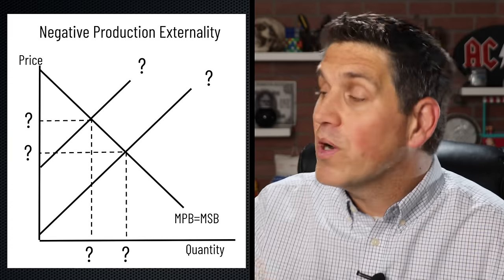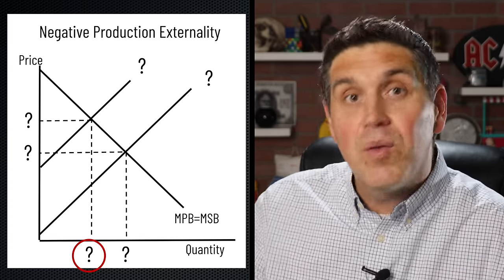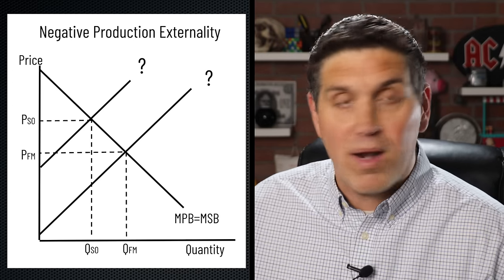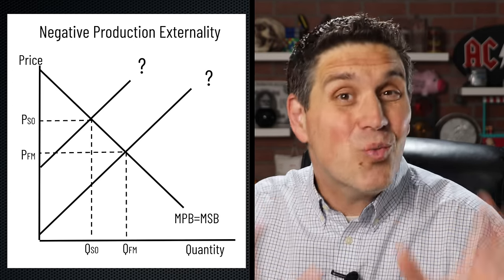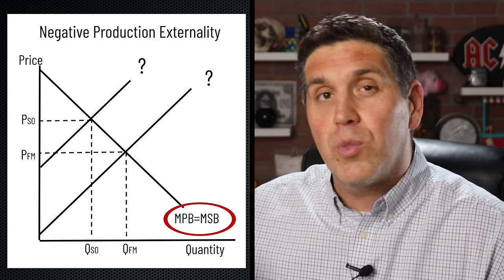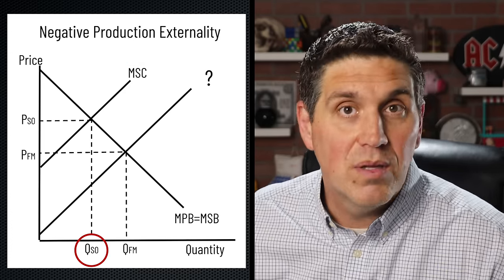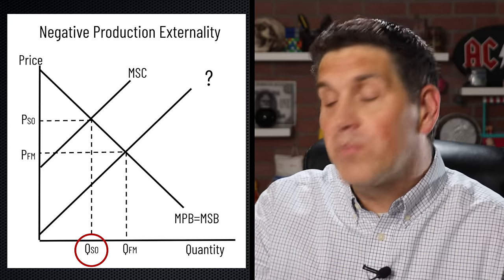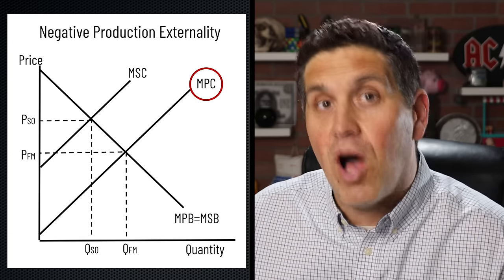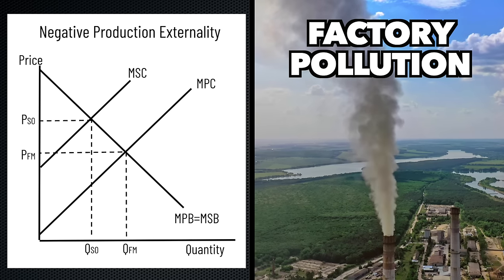If you're drawing a negative production externality, that means you have two cost curves. The quantity to the left must be the socially optimal quantity because the quantity on the right is the free market — we're producing too much. You know the marginal social benefit equals marginal social cost at the socially optimal quantity. And since there are two cost curves and one is already the marginal social cost, the other must be the marginal private cost. That's the correct graph for a negative production externality.